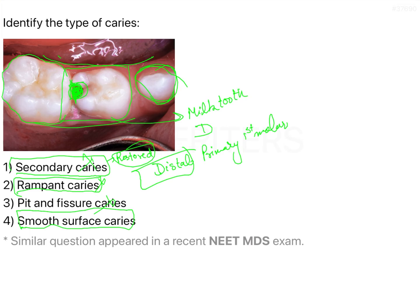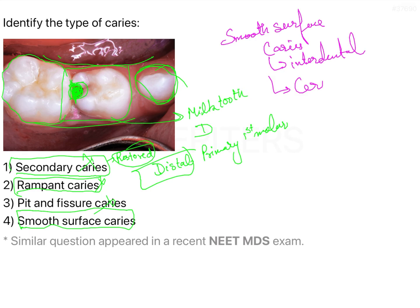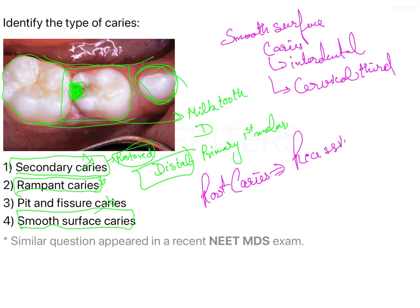Smooth surface caries are generally seen in the interdental area, that is the proximal area, or in the cervical third of the teeth where more plaque accumulates and is harder to clear. There are also root caries, or cemental caries, which are generally seen in older patients who have gingival recession — due to the recession, the root surface becomes exposed and is more prone to developing caries.